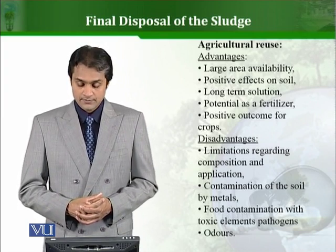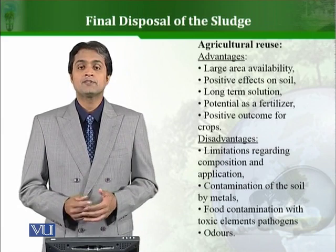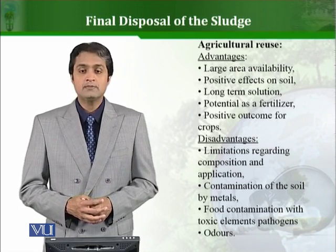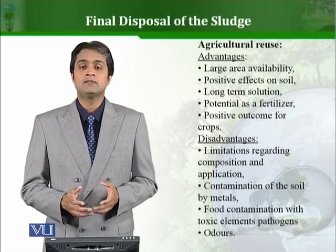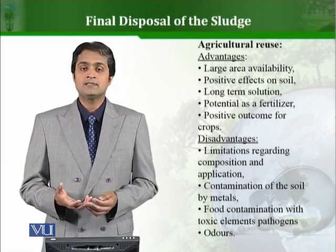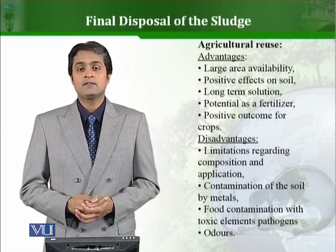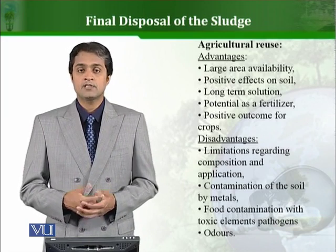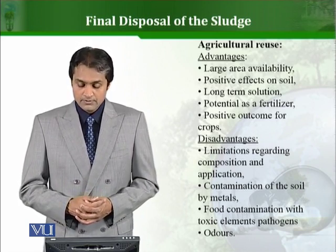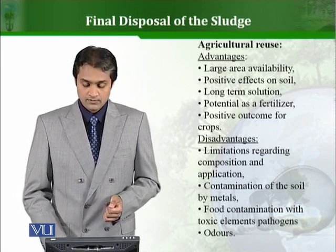Disadvantages of agricultural reuse include limitations regarding composition and application — not every sludge can be used for agriculture purposes. Contamination of the soil by metals can occur: if toxic metals or compounds that cannot be degraded are present in the sludge, they will be introduced to the site where crops are grown, and these toxic metals can ultimately find their way into the crops. Soil contamination with toxic elements, pathogens, and odor generation are also concerns.